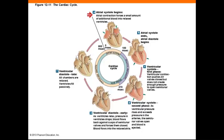The second phase of ventricular systole is the ejection phase, where the pressure in the ventricles rises high enough to push open the semilunar valves, and blood is ejected from the ventricles.